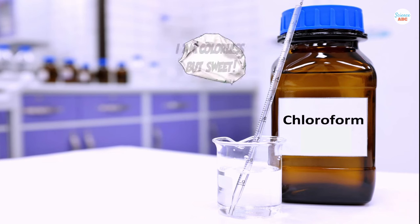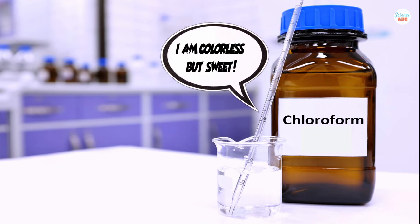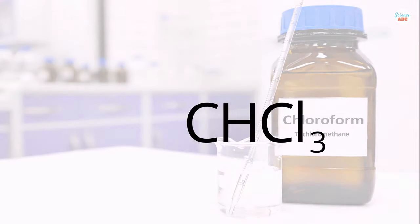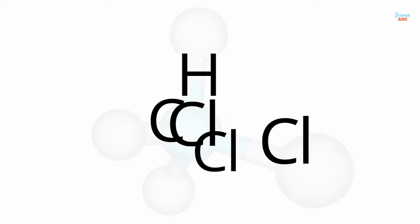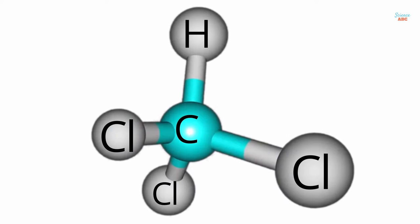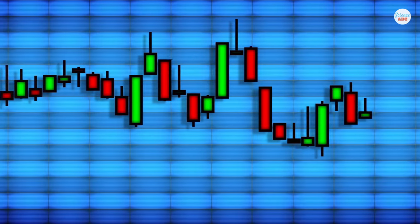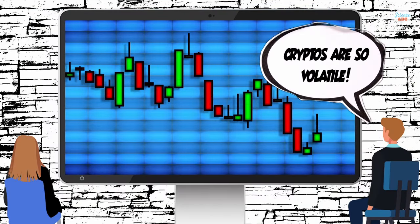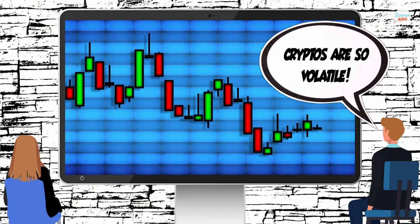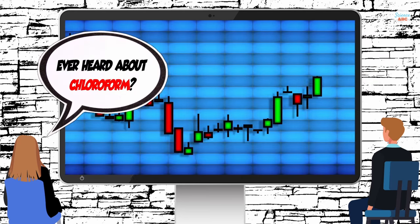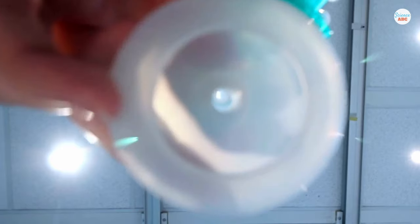Chloroform is a colorless, sweet-smelling organic compound with the IUPAC name trichloromethane and the chemical formula CHCl3. It is a dense liquid with tetrahedral molecular geometry and C3 symmetry. Chloroform is a highly volatile liquid that has been widely used throughout history due to its narcotic properties, and it has a reputation for anesthetizing or rendering people unconscious, even when consumed in small doses.